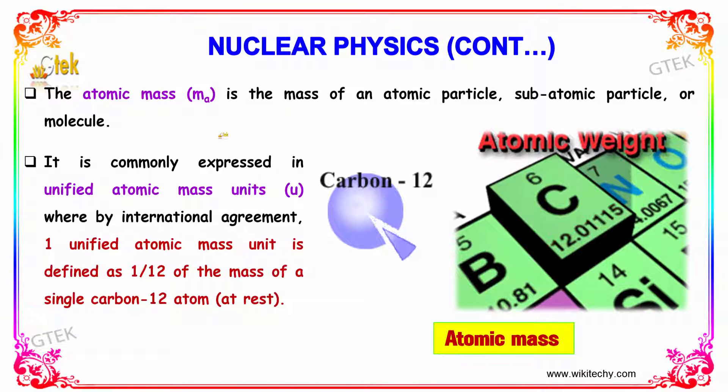The atomic mass is nothing but the mass of an atomic particle, subatomic particle or the molecule. It is commonly expressed in unified atomic mass units, which is nothing but one unified atomic mass unit is defined as 1 by 12 of the mass of a single carbon-12 atom at rest.